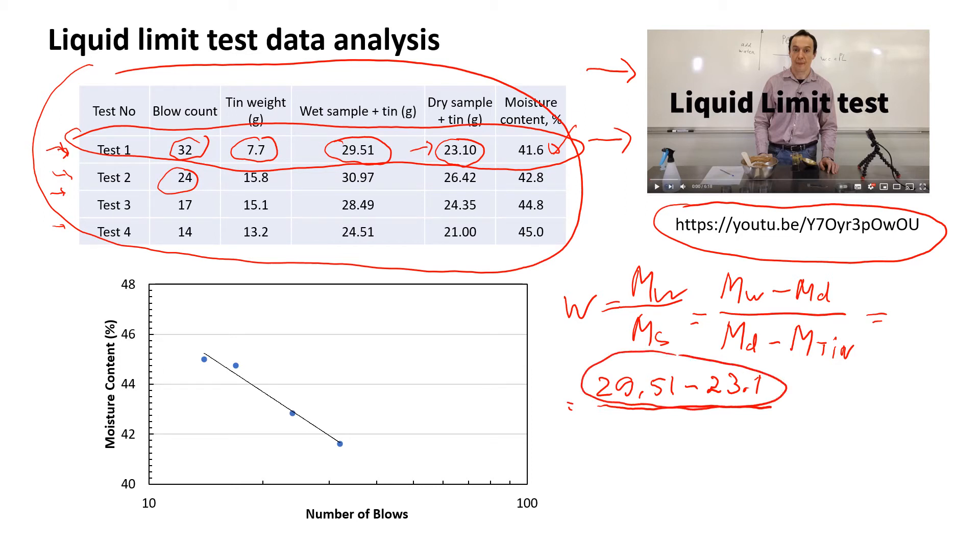Mass of solids is mass of dry soil with the tin, 23.1, minus the mass of the tin just by itself, 7.7. What I did, I changed it to a percentage so multiply by 100 percent. If you do the calculations by yourself, you will see that for water content, or what we call it also moisture content, I'm going to have 41.6 percent.